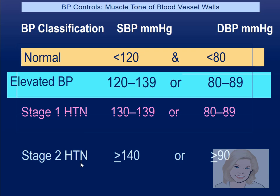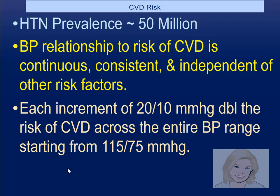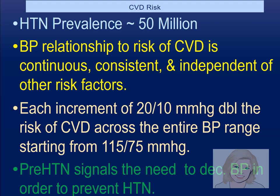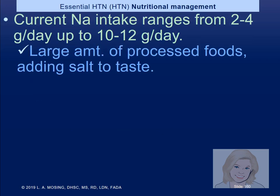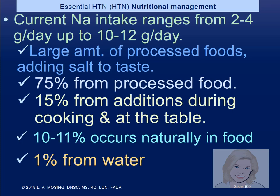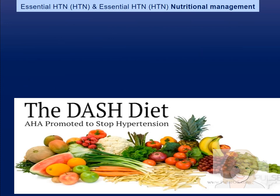If blood pressure is too high for lifestyle alone, medication is added — stage one usually means one medication, stage two may mean two medications like an ACE inhibitor or a beta blocker. If a patient follows a healthier diet and takes medication, the goal is to reduce their risk of heart disease. Most sodium comes from processed food — eliminating processed food reduces sodium, saturated fat, and other risk factors. The DASH diet with fruits, vegetables, and whole grains increases potassium, which is protective against hypertension.